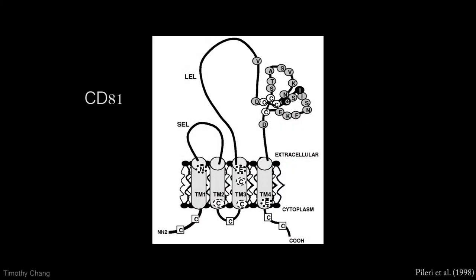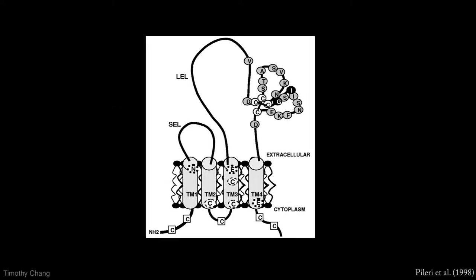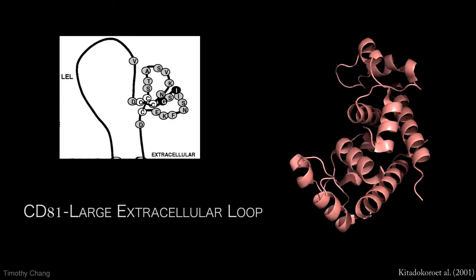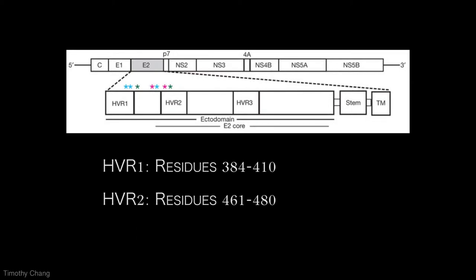E2 binds to hepatocytes through interaction with receptors such as CD81. More specifically, E2 binds to the large extracellular loop, LEL, of CD81. This has been known to be modulated by hypervariable regions HVR1 and 2.